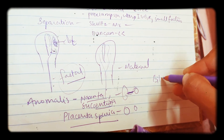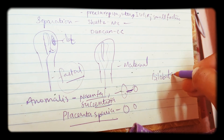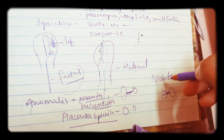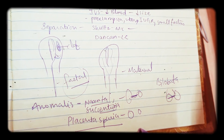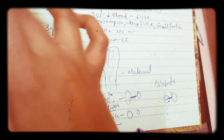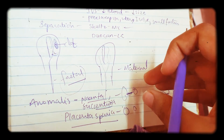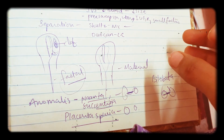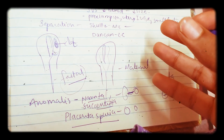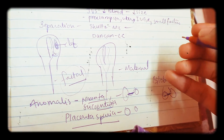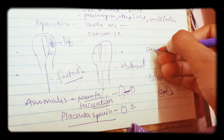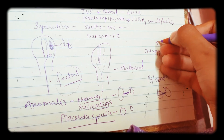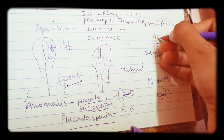Next is placenta bilobata. In the name itself you can see there are two lobes, but they are of equal size and connected by a blood vessel. In all these anomalies there will be postpartum hemorrhage. The management is postpartum curettage. However, performing curettage can in turn lead to Asherman syndrome.